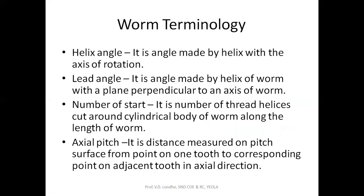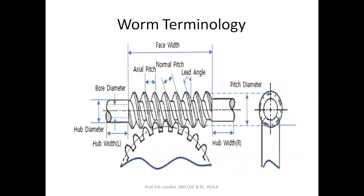The number of starts is nothing but the number of threads present on the worm, which are present on the cylindrical body. Next, the axial pitch is the distance measured on the pitch surface from one point to the corresponding point on the adjacent thread in the axial direction — that is, the distance measured along the centerline of the worm between two consecutive points on the worm thread.